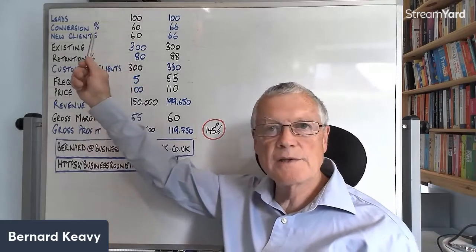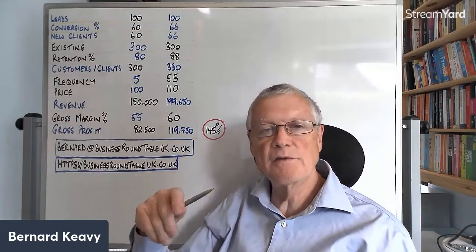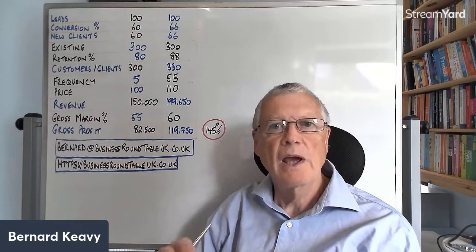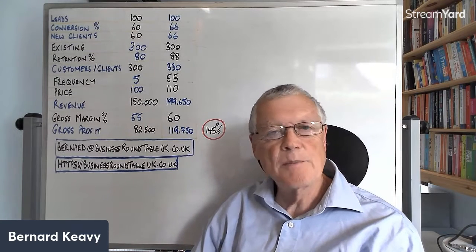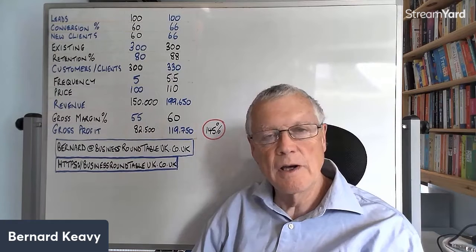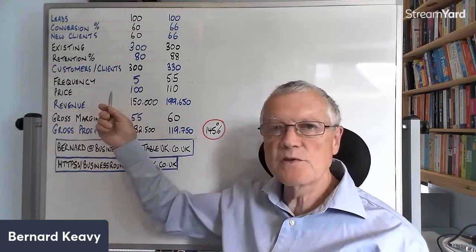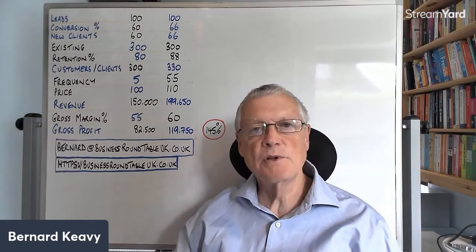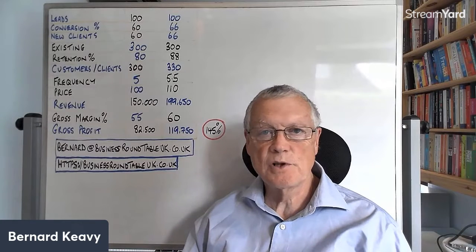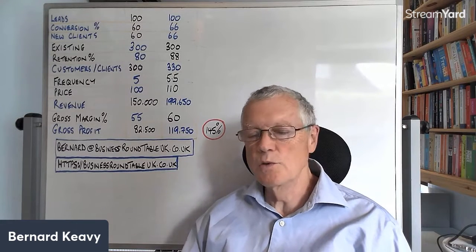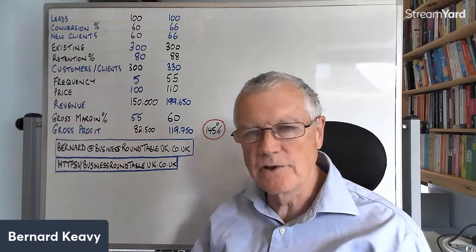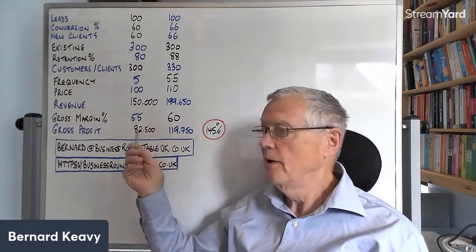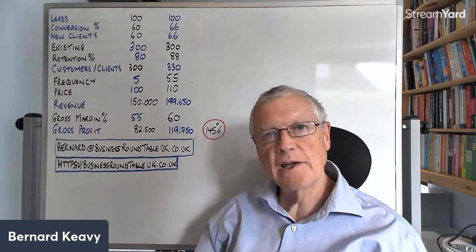So you can see that making a few small improvements across a few different variables, which are all under your control — how many enquiries you convert, how many customers you hold on to, what are you doing about your cost levels, can you get people to spend more frequently and spend slightly more each time — all of those strategies add up to a huge difference to your bottom line. And you don't have to go out spending lots of marketing budget on generating new leads, and you don't even have to put up your headline prices if you're worried about losing customers to competitors — although you probably should. So lots of ways to increase your gross profit and then your bottom line without spending lots on generating new leads or without raising your headline prices.